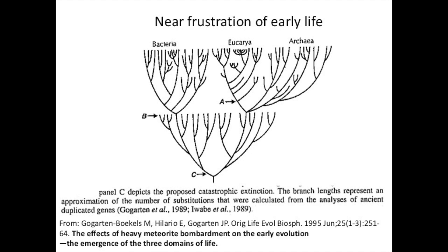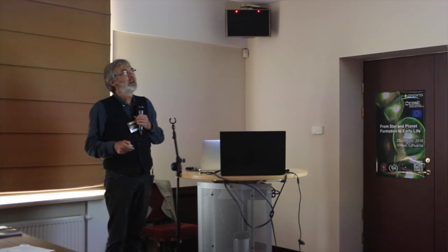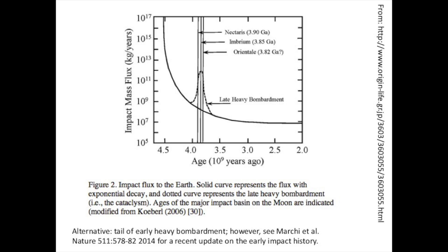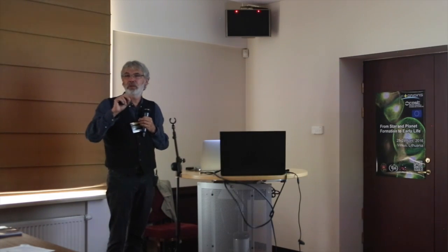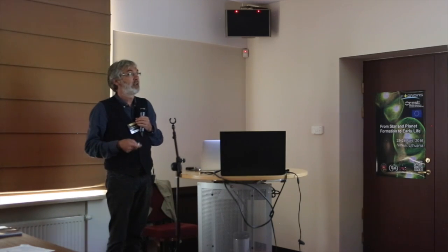Under the impact frustration scenario, we have the three domains of life, a nearly complete impact frustration, and two surviving lineages giving rise to archaea, bacteria, and the eukaryotic nucleocytoplasm. If we try to pinpoint where in Earth's history such an event could have selected for extreme thermophily, one possibility is the late heavy bombardment at 3.8 billion years ago — though some astronomers tell me the late heavy bombardment didn't really occur, in which case it may have been the tail of the early heavy bombardment. If this was the cause of the extinction followed by radiation, we could date the ancestor of the bacterial and archaeal domains to about 3.8 billion years, with the last universal common ancestor existing long before that event.